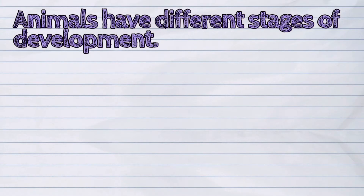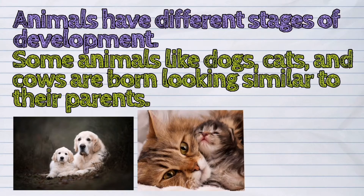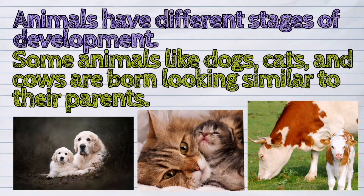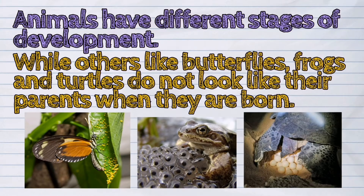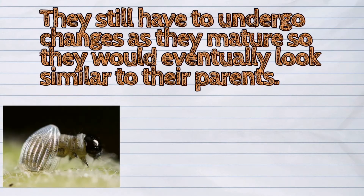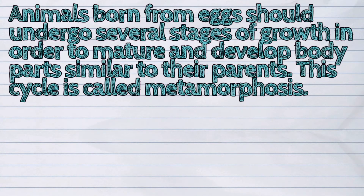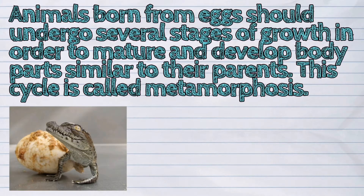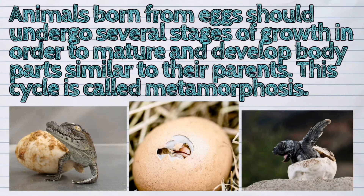Animals have different stages of development. Some animals like dogs, cats, and cows are born looking similar to their parents. While others like butterflies, frogs, and turtles do not look like their parents when they are born. They still have to undergo changes as they mature so they would eventually look similar to their parents. Animals born from eggs should undergo several stages of growth in order to mature and develop body parts similar to their parents. This cycle is called metamorphosis.